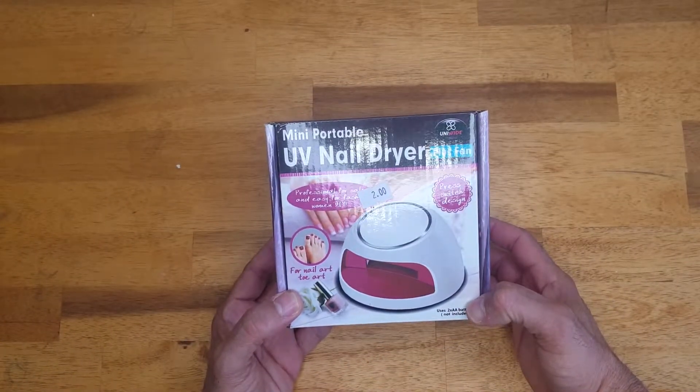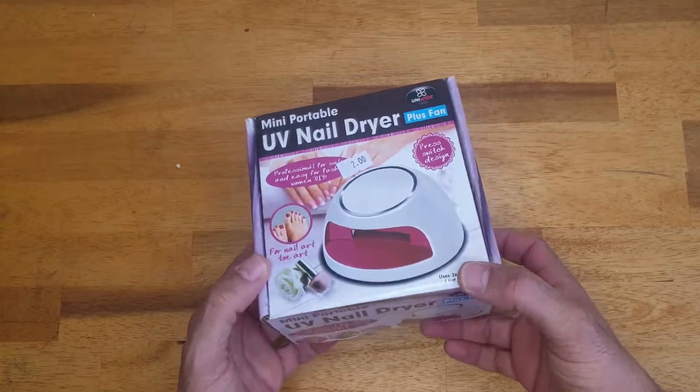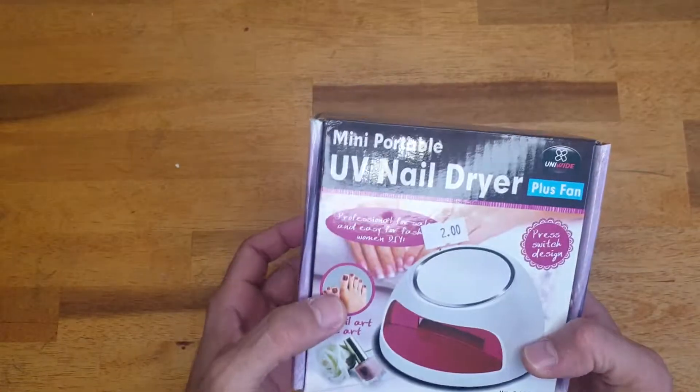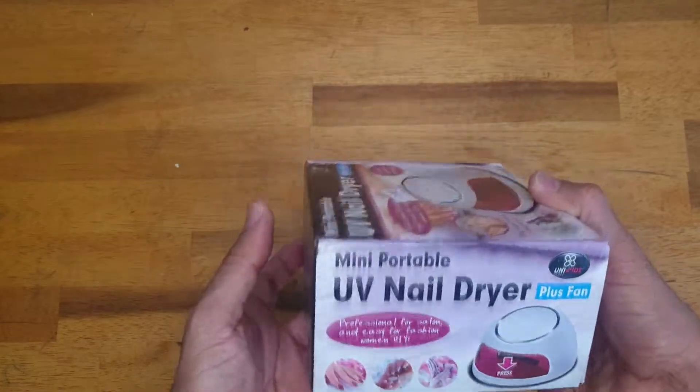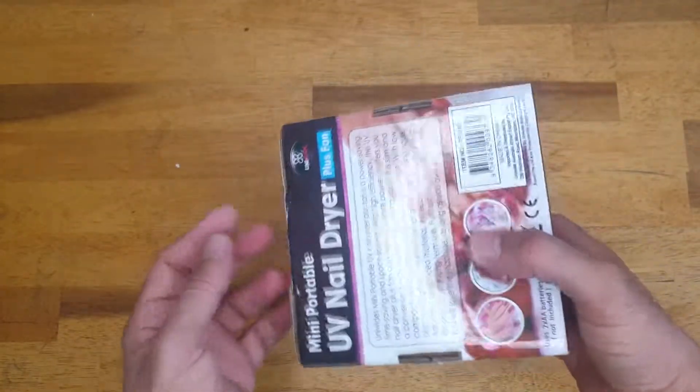I got this mini portable UV nail dryer plus fan from the second-hand store, Brotherhood of St. Lawrence, and I paid two bucks. It's in a box, it's used, nothing new. So two bucks, I think I thought this is a bargain.